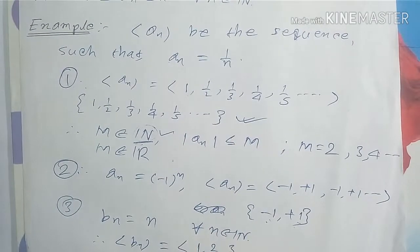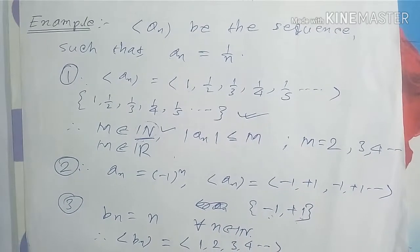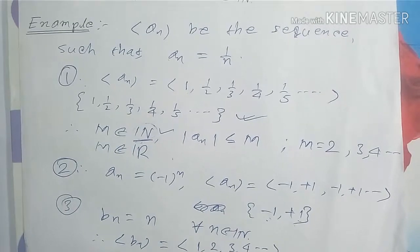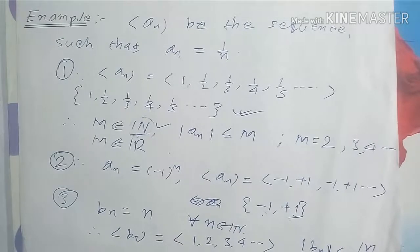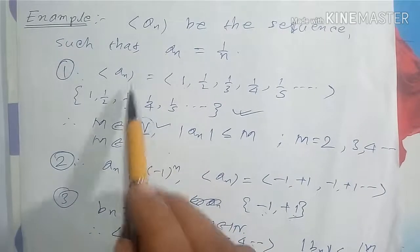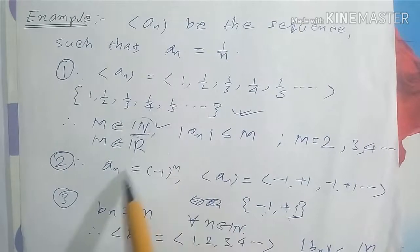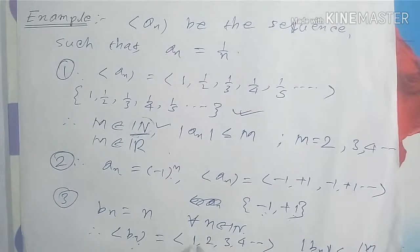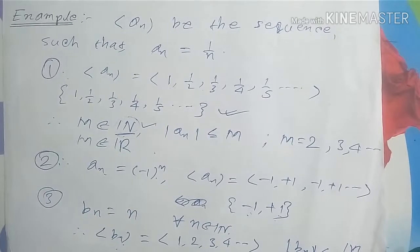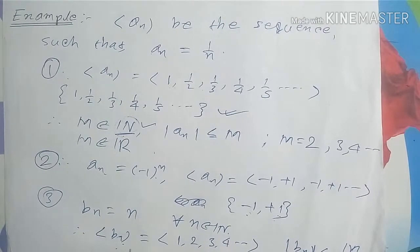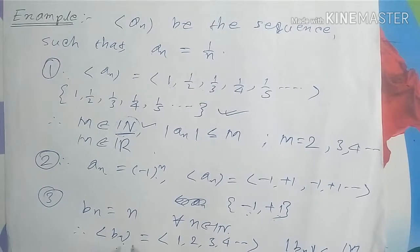There must not exist any real number M such that |b_n| ≤ M. So b_n is not a bounded sequence. The first two examples are bounded sequences, but b_n = n is not a bounded sequence, since we cannot find one real number M for which all elements of b_n are less than or equal to M.